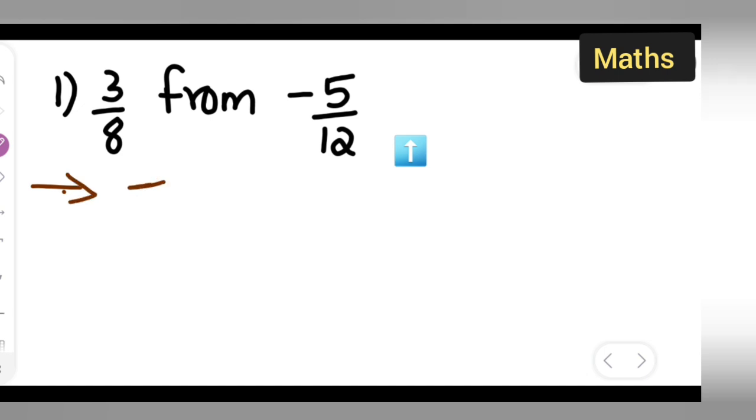First we can write down -5/12. Because we are subtracting this from this number, -5/12 write it first and then -3/8. So -3/8 will come after that. Now let us subtract this.